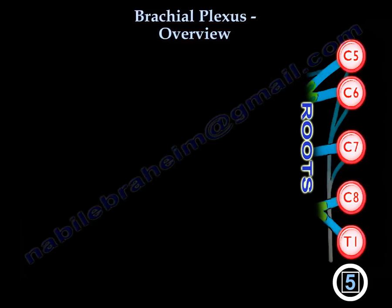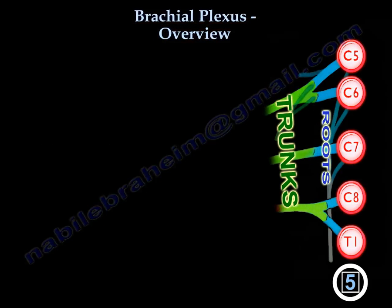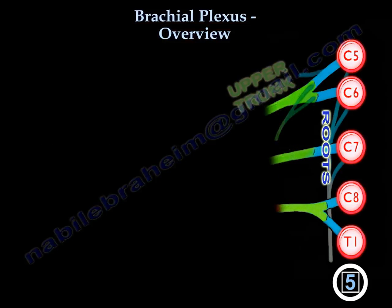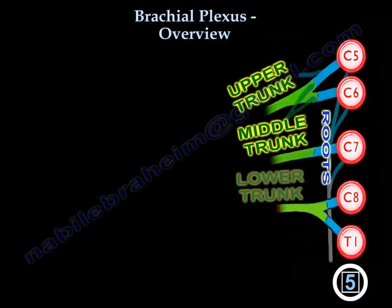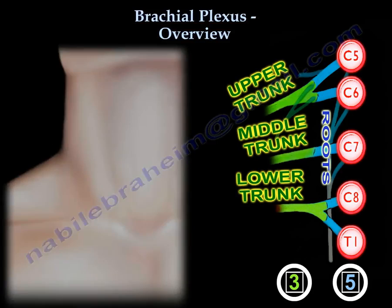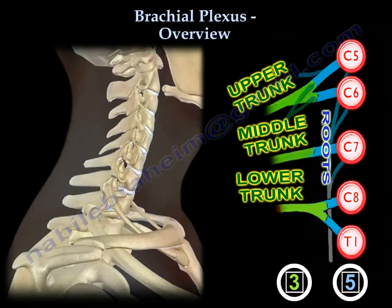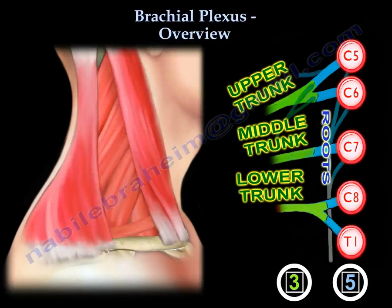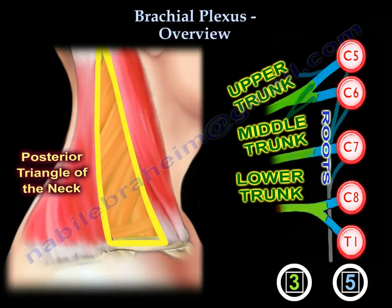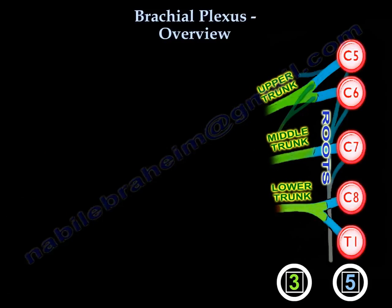After the roots, you find the trunks: the upper trunk, the middle trunk, and the lower trunk — three trunks in total. They pass through the posterior triangle of the neck. So five roots give you three trunks.